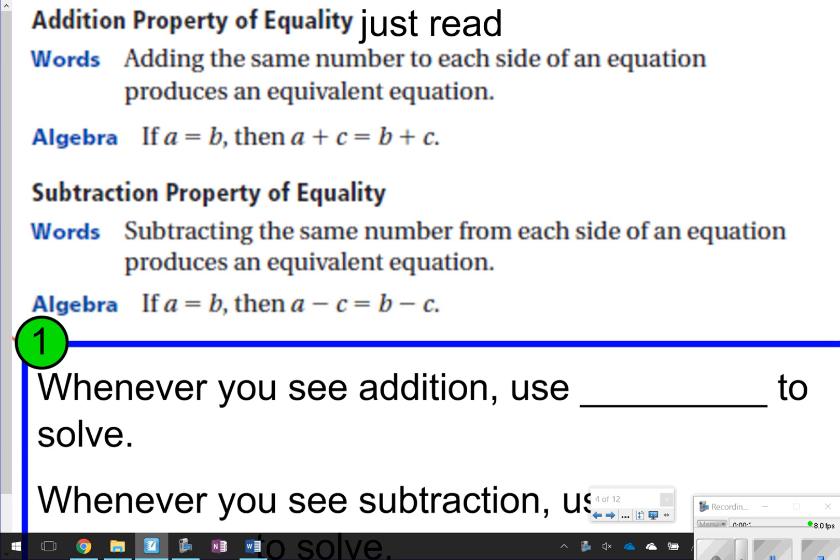It says basically when you add a number to both sides of an equation, it produces an equivalent equation. So for instance, if a equals b, if you added c to both sides, it would still be equal. The same thing is true with subtraction. If you subtract the same number from both sides, it will still be equal.